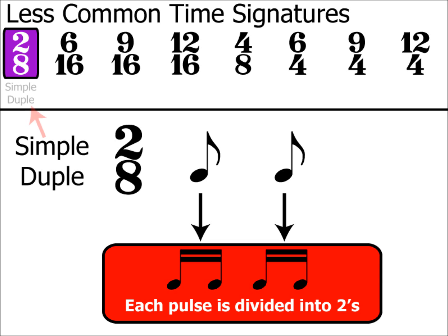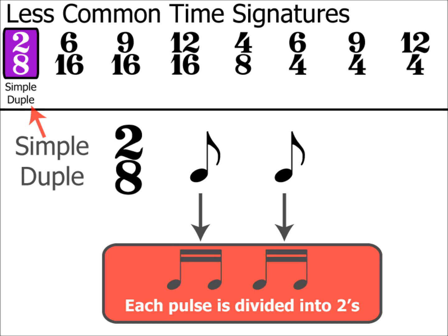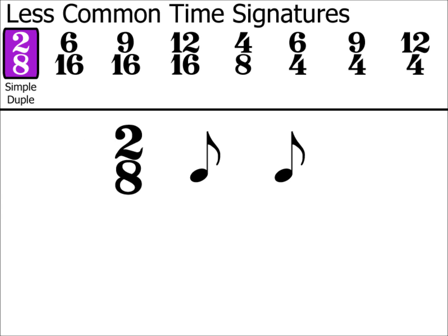With two beats in the bar, it is therefore a duple simple time signature. And for this and all time signatures in this video, I'll add their full name at the top of the screen, where the red arrow is pointing at the moment. Now, you might say, why have 2/8 when you could have 1/4? 1/4 having one crotchet in each bar — one crotchet being the same as two quavers.